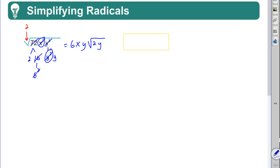Everything else stays in. Alright, so I still have a 2 in and I still have a y in. So 6xy times the square root of 2y.